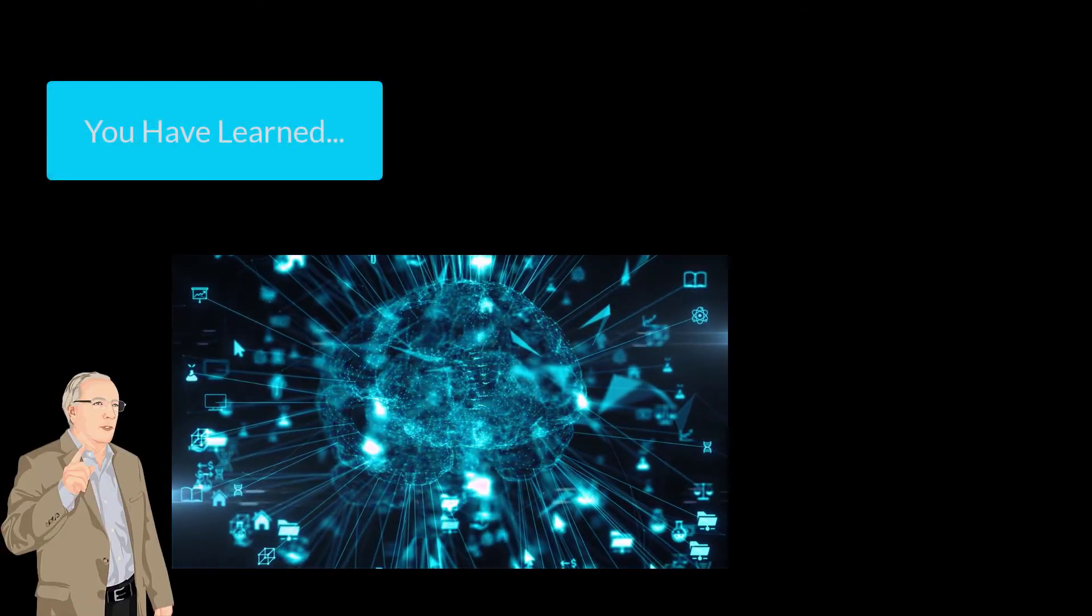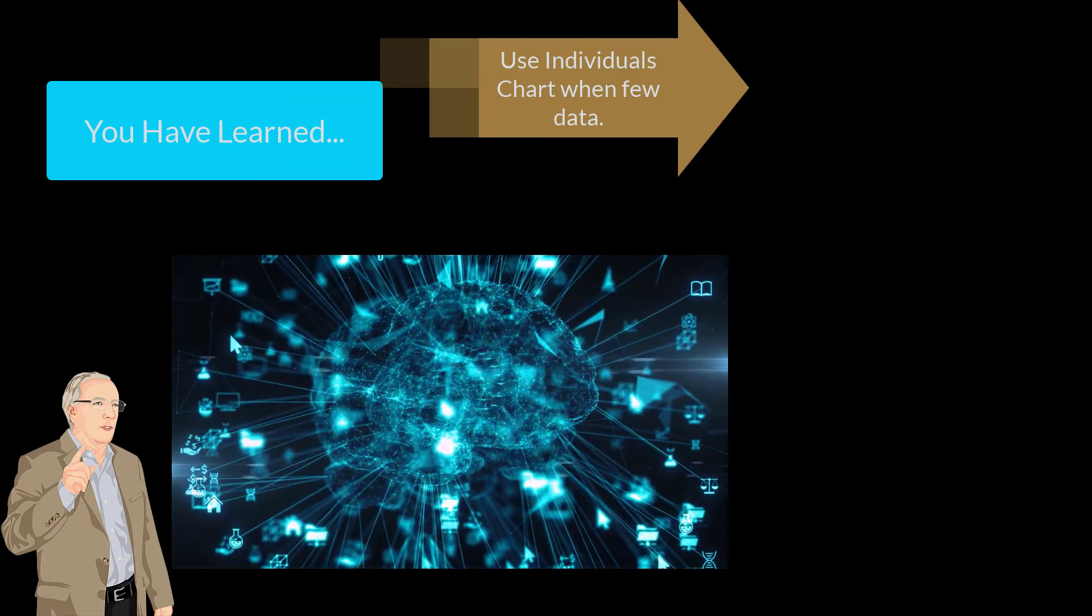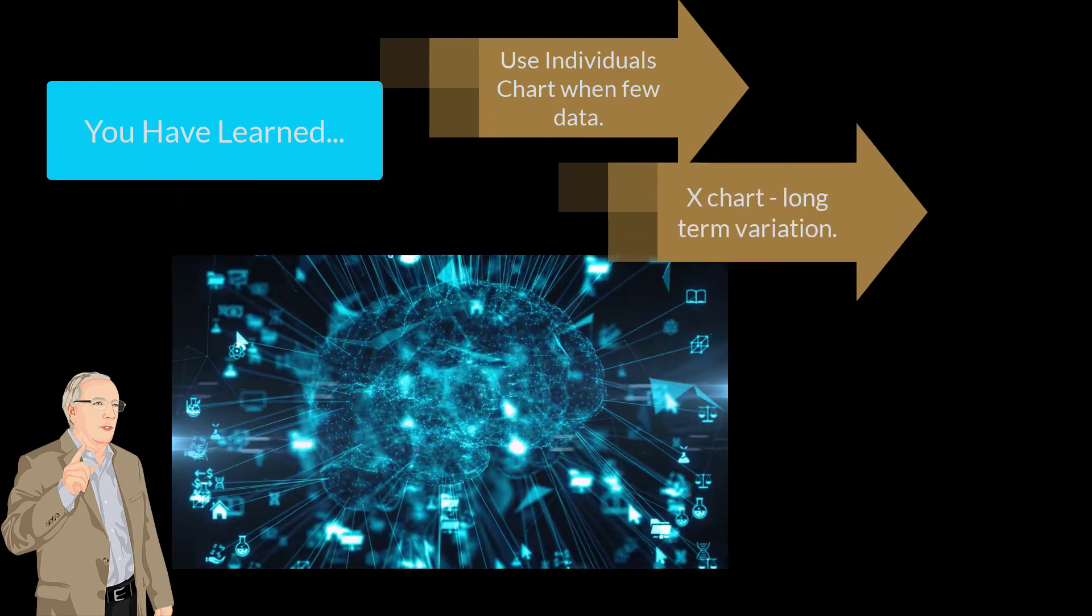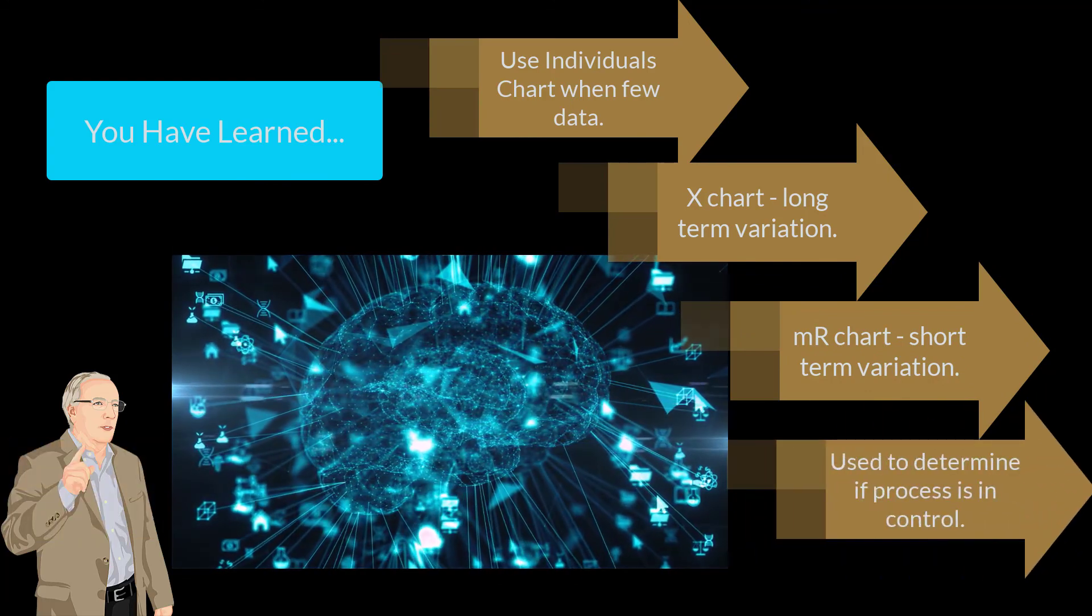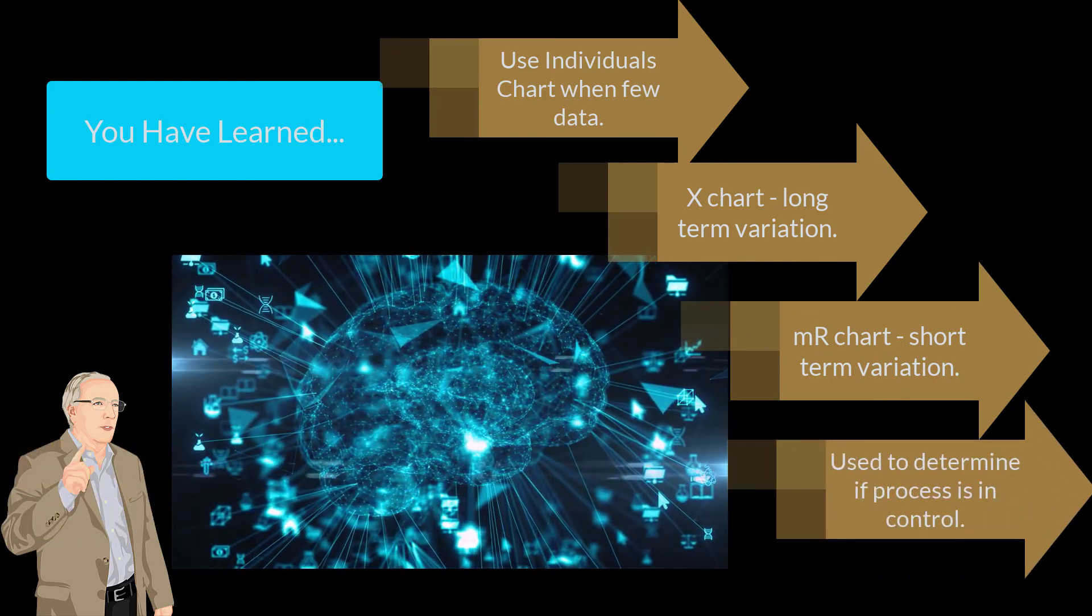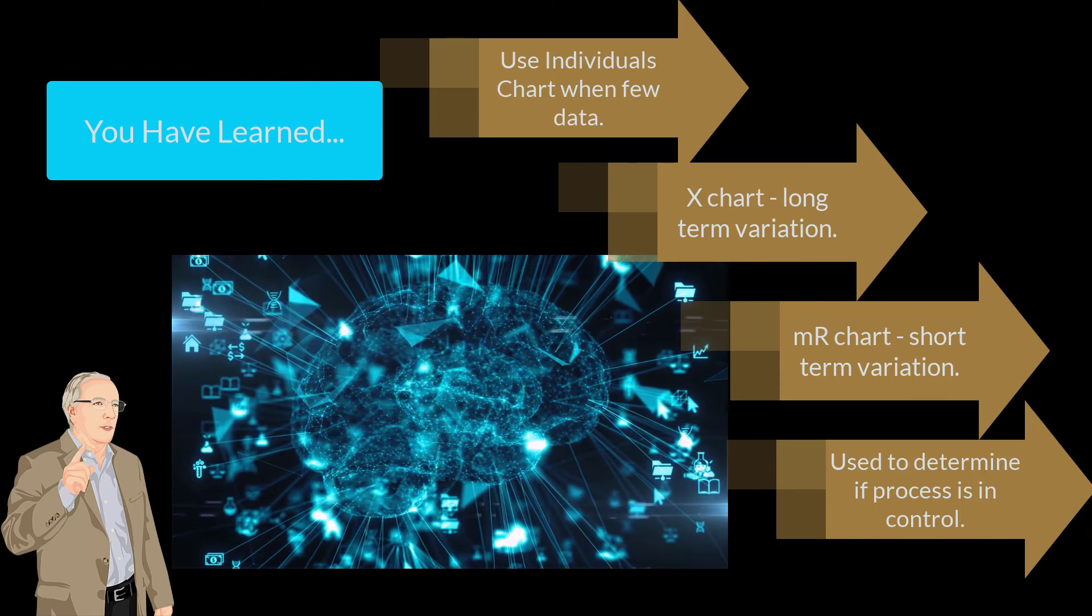So what have we learned and looked at in this quick video? We looked at individuals control charts that you can use when you don't have much data. The X chart looks at the long-term variation. The moving range chart's a short-term variation. And you use it to determine if your process is in control or if you have special causes.